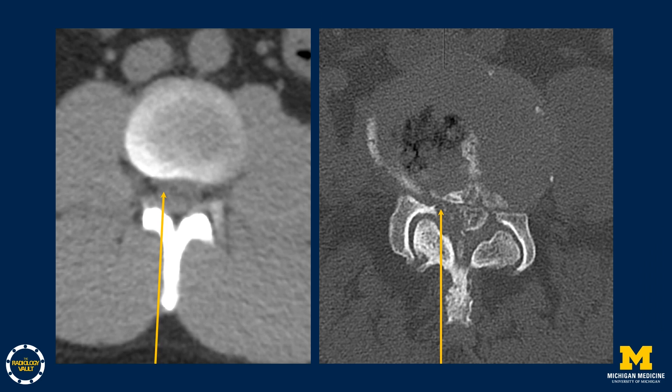In a patient relatively free of degenerative change, this route will usually allow access to the narrower lateral part of the thecal sac. However, if there are significant degenerative changes, particularly facet and ligamentum flavum hypertrophy, as shown on the image on the right, the lateral part of the spinal canal can be entered, but the narrowed thecal sac may not be entered with this route.